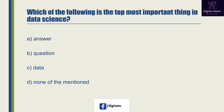Next question: which of the following is the top most important thing in data science? The right answer will be B: question. The second most important thing is the data. So the question is the most important thing in data science, and data is the second most important thing.